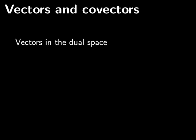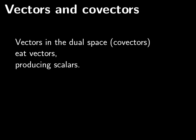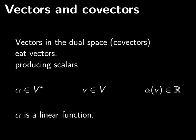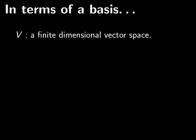Now that we've built the dual space, there's a bit of terminology to introduce. If you think of V as consisting of vectors, some people call the linear functionals in V star co-vectors. So co-vectors are just vectors in the dual space. This terminology may not be standard among mathematicians, but it's convenient. A co-vector eats a vector and gives you a scalar. So if alpha is a linear functional — an element of V star — and V is a vector in big V, then alpha(V) is just a scalar. Alpha is not an arbitrary function from V to R; it's a linear function from V to R.